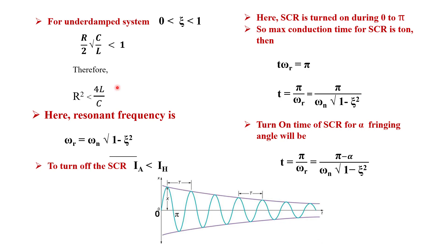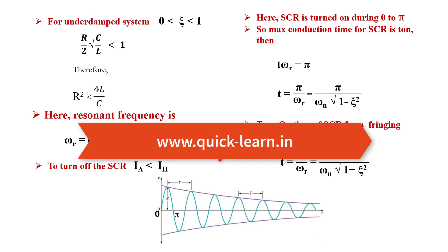These equations — the underdamped condition, resonant frequency, and turn-on time formulas — are very important for competitive exams and solving numerical problems. If the circuit does not operate as an underdamped system, the current will not oscillate and the SCR will not turn off, so ζ must lie between 0 and 1. If you like the video, please like, subscribe, and share my channel. For notes, please visit my website www.quick-learn.in.